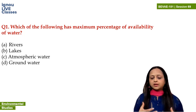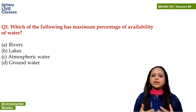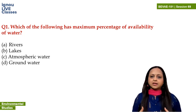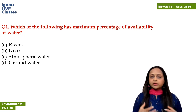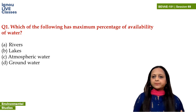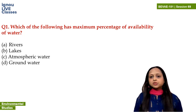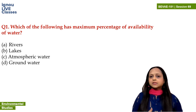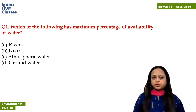Atmospheric water contributes only about 0.29% of freshwater. The percent of water available as rivers, lakes, ponds, and streams is very less — around 0.29% to 0.26%. But the second major portion of freshwater is present as groundwater, almost 29%. So groundwater has the maximum percentage of availability of water among these options. The answer is D.